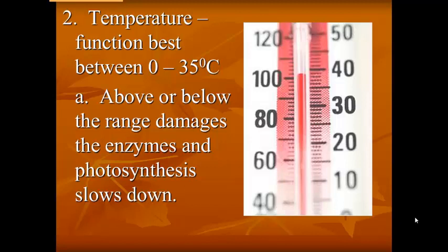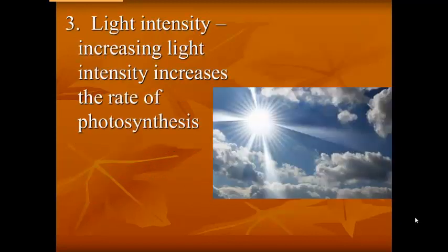We can see a speed change in how much food can get made. The last factor is light intensity. On really beautiful bright days with no clouds in the sky, the plant will increase its rate of photosynthesis — in other words, its speed. It can create more food on a very bright sunny day versus an overcast, rainy, what we would consider maybe yucky day.